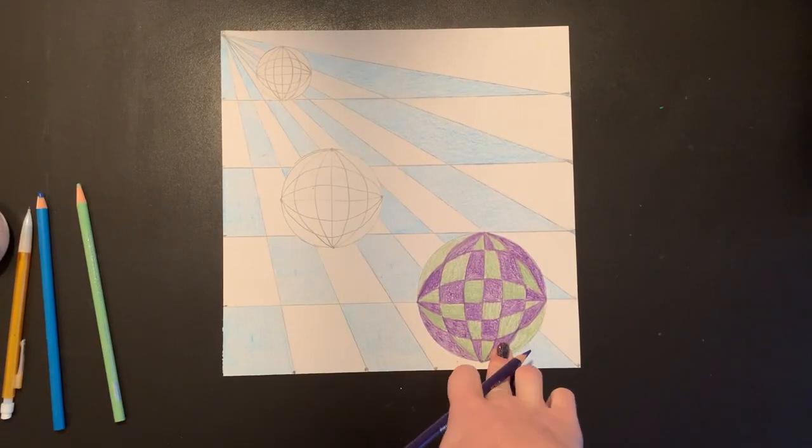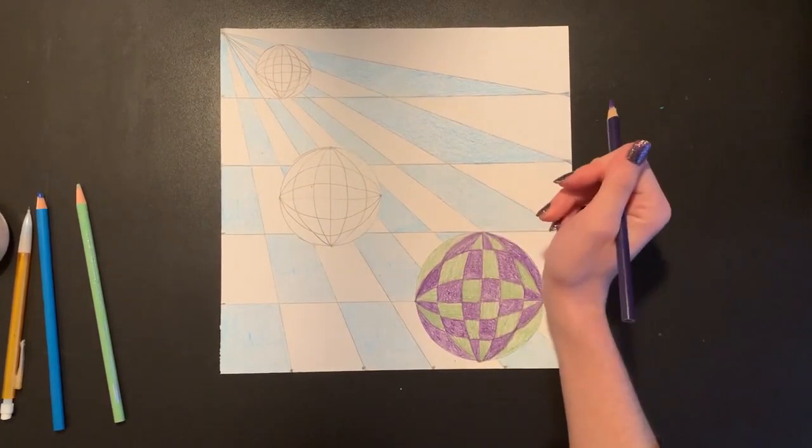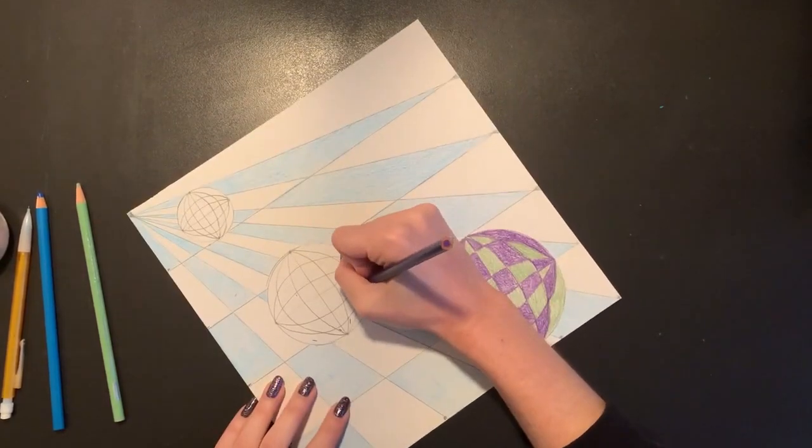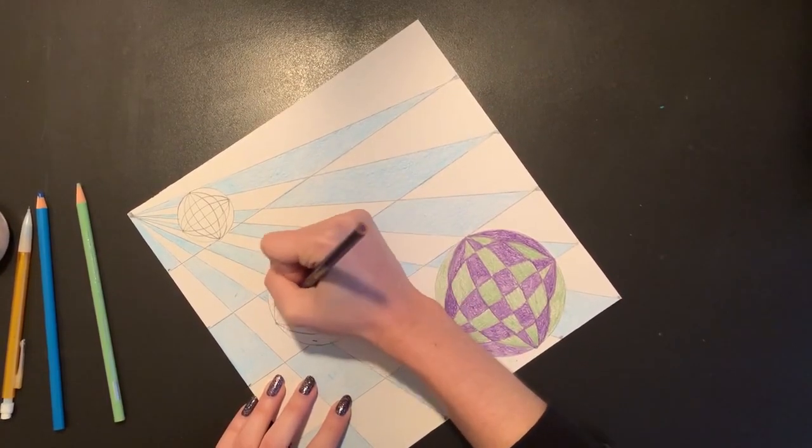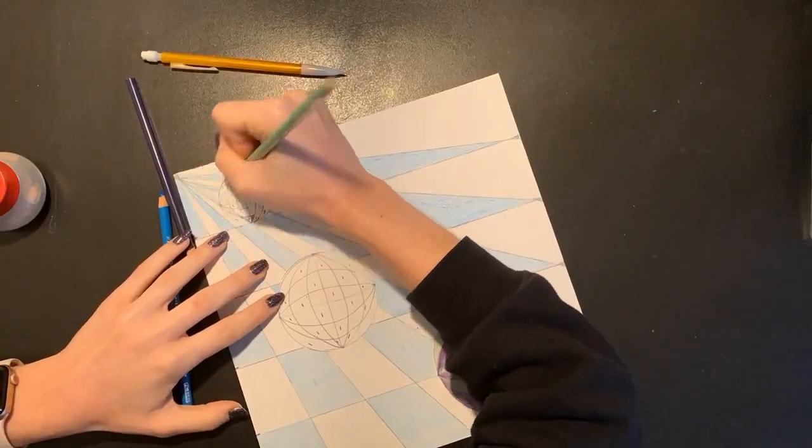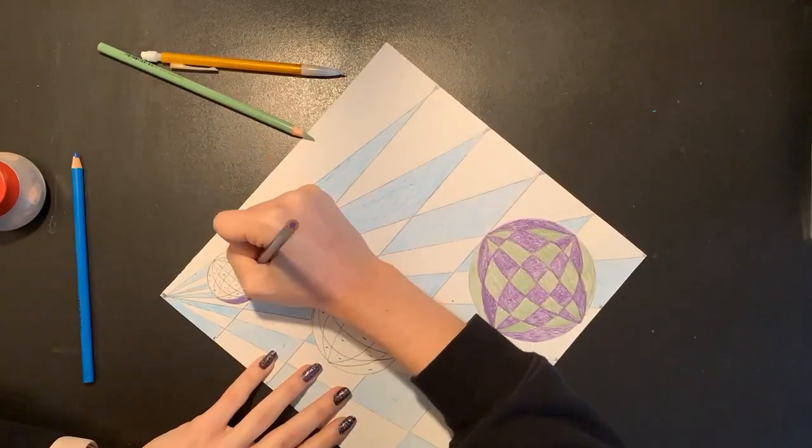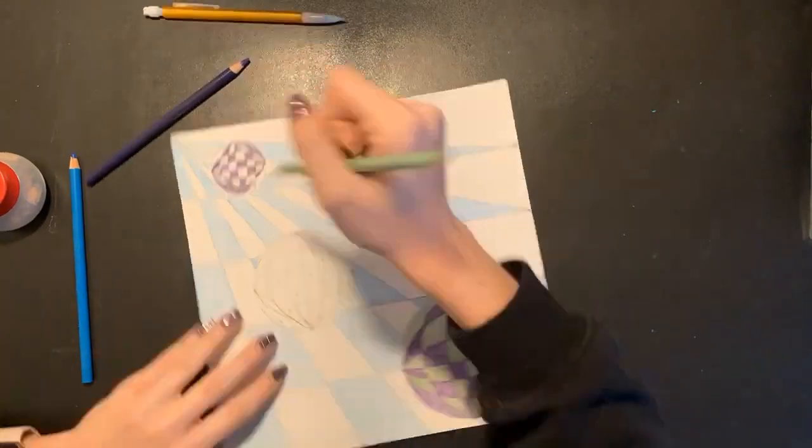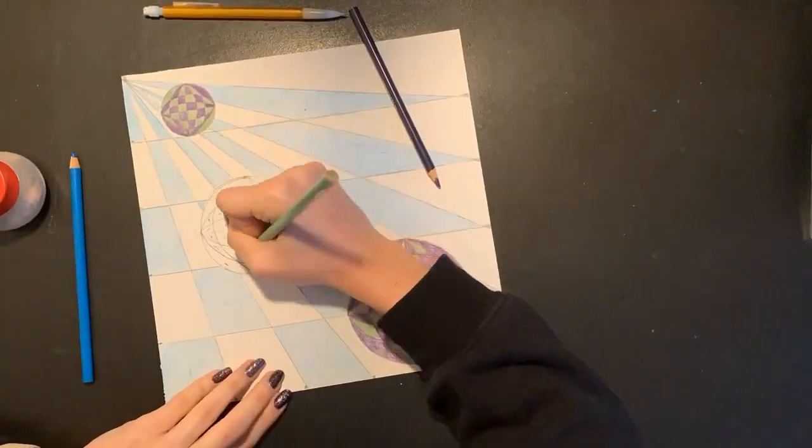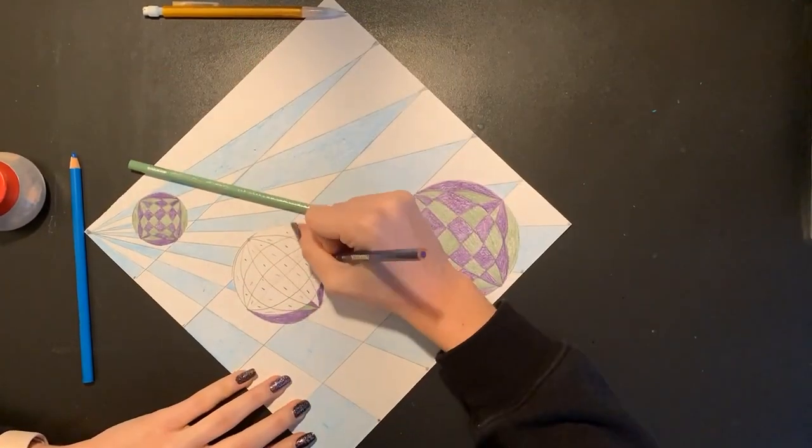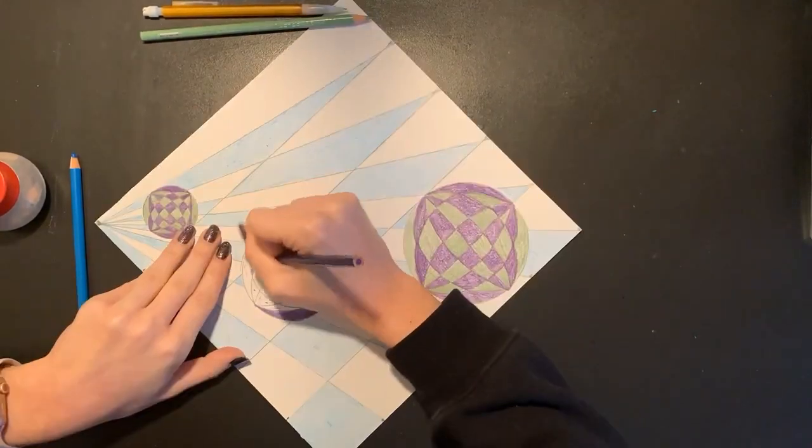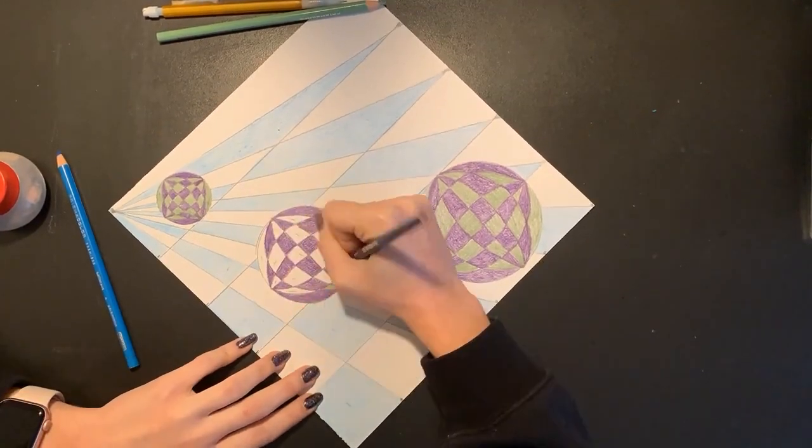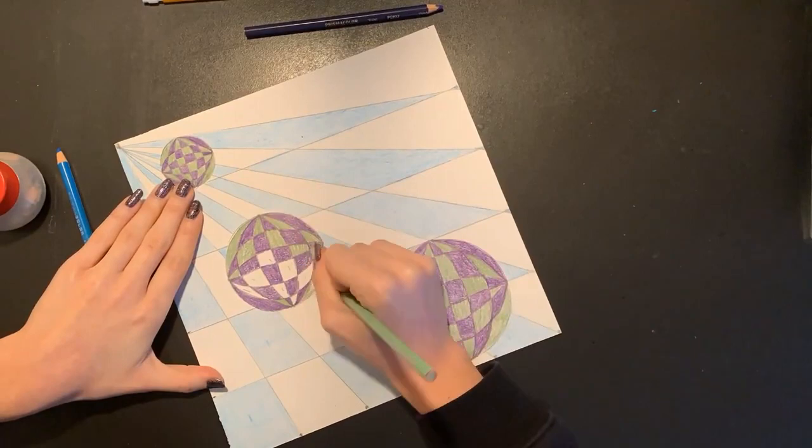And that's what my first sphere looks like all colored in. I'm going to go in and mark the other two and color those in with my purple and green colored pencil the same way, where I am going to create a pattern by alternating my colors inside each box. I'm marking them first so I don't make a mistake, and I'm going to double-check it a few times before I start to color it in.